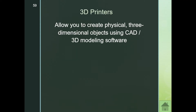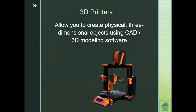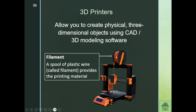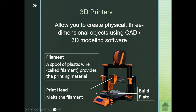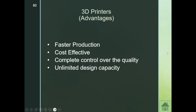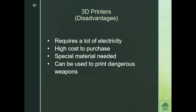Now we bring in our 3D printers. 3D printers allow you to create physical three-dimensional objects using 3D modeling software. The filament is used as material, going through the print head and onto the build plate — known as the bolt plate — to create the three-dimensional object. Advantages: faster production, cost effective, complete control over quality, and almost unlimited design capacity.